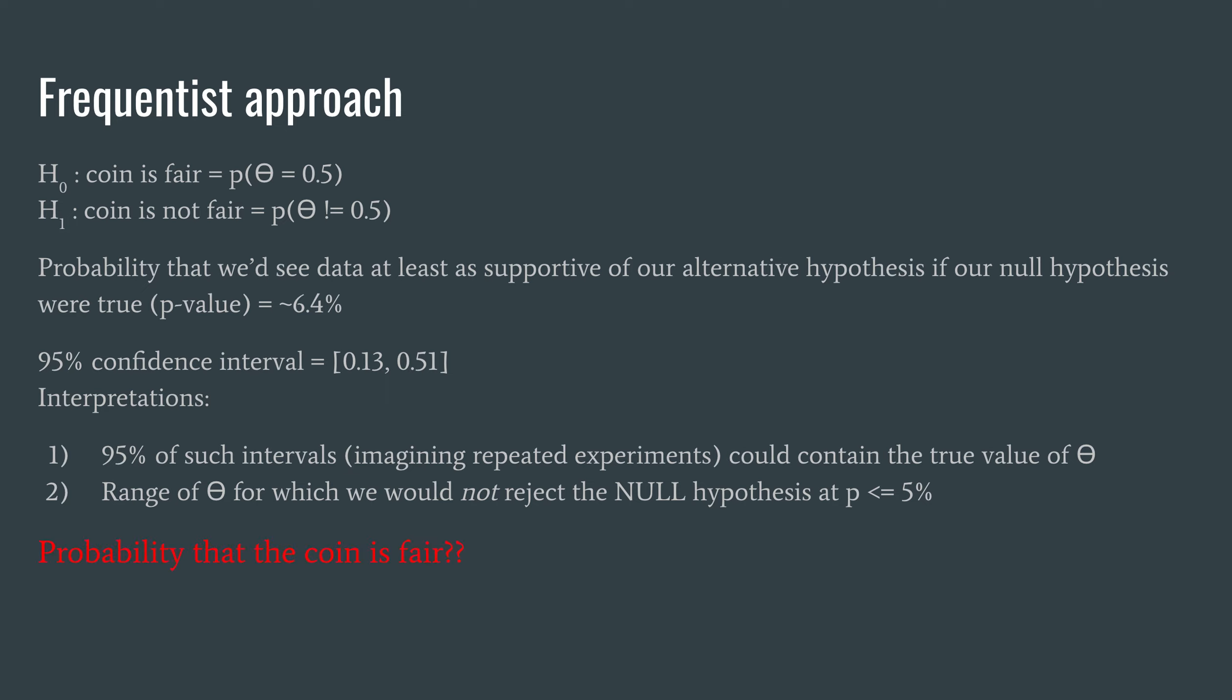So the point being, both of these common tools using frequentist statistics, the p-value and a 95% confidence interval, have somewhat tricky interpretations that are difficult to get across if presenting results to someone who may not be familiar. And also they don't tell us what we arguably really want to know, which is the probability that the coin is fair.